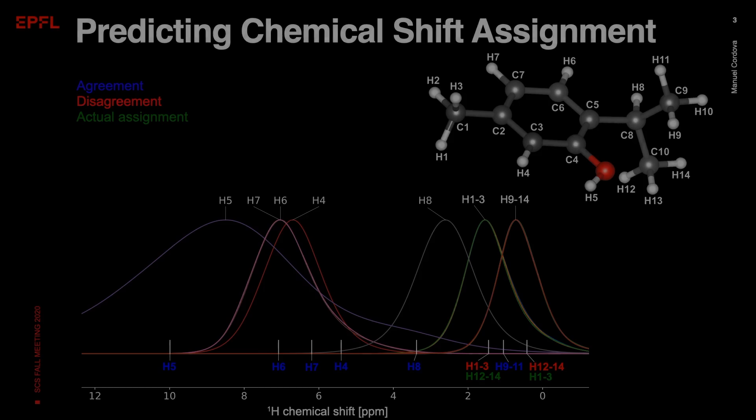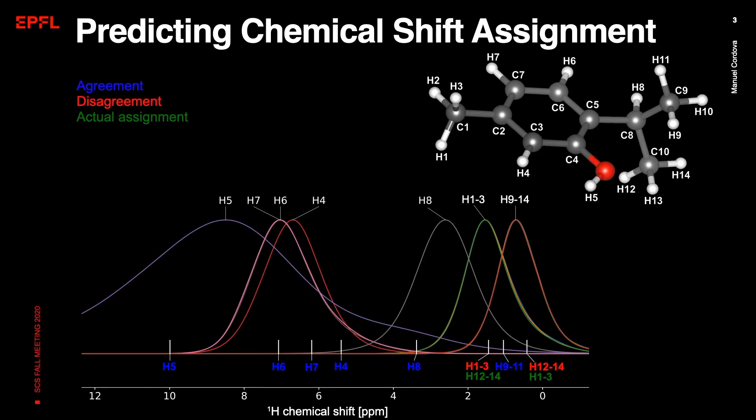Now that our chemical shift database is fully constructed, we can predict the assignment on a model system, the thymol molecule. For the proton chemical shifts, we obtain the correct assignment except for the three methyl groups. It is also important to note that these two methyls cannot be told apart by the model, because they are topologically equivalent.